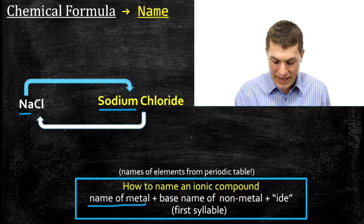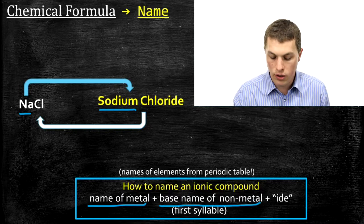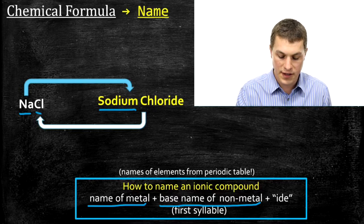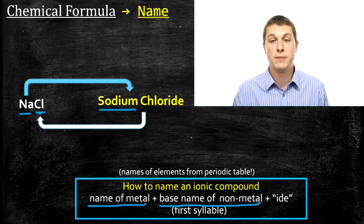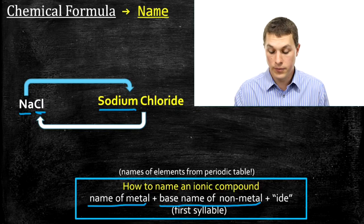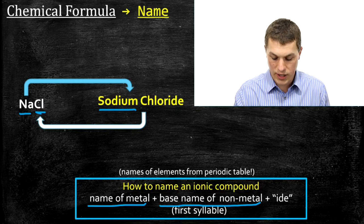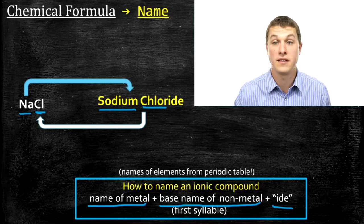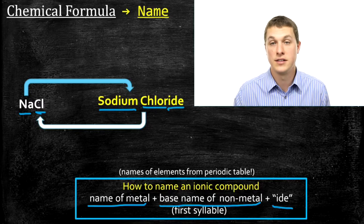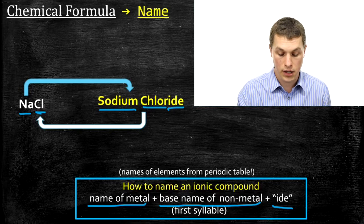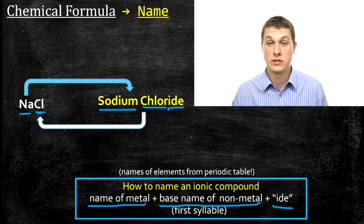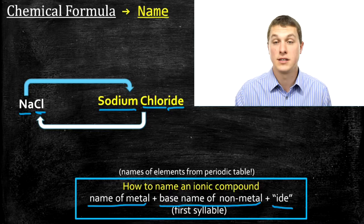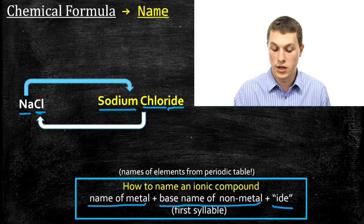The next thing we do is take the base name of the non-metal, which basically means the first syllable of our non-metal. In NaCl, the non-metal is chlorine, so we just keep the 'chlor' part — that's the base name. The last thing we do is add 'ide'. That's how we get chloride: 'chlor' comes from the base name of chlorine, and 'ide' is just something we tack on to the end for ionic compounds. So NaCl turns out to be sodium chloride.